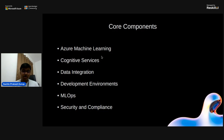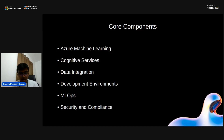The next core component is Cognitive Services. These services provide pre-built AI models that can be integrated into applications to add intelligent features. For example, the Vision service can analyze images and videos; the Speech service provides speech recognition and synthesis; the Language service offers text analytics and translation — which is essentially natural language processing; and the Decision service enhances decision making with anomaly detection and personalization capabilities.